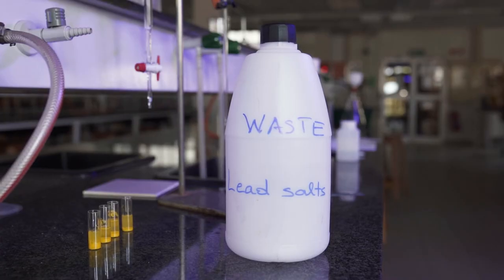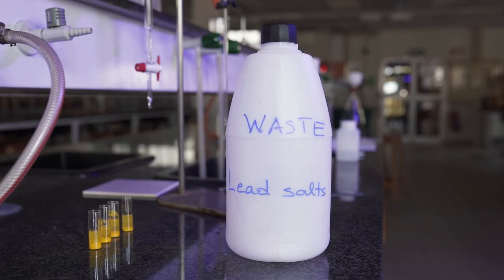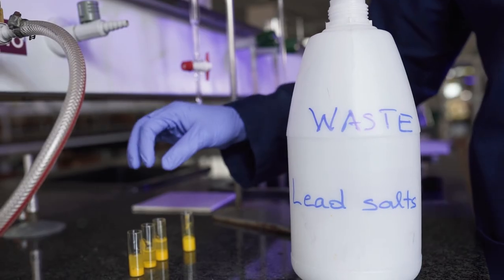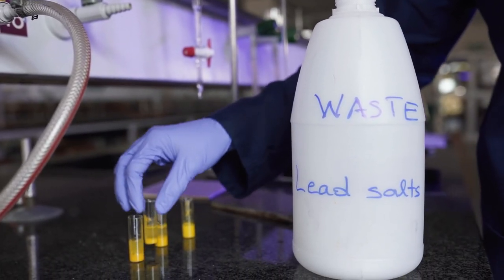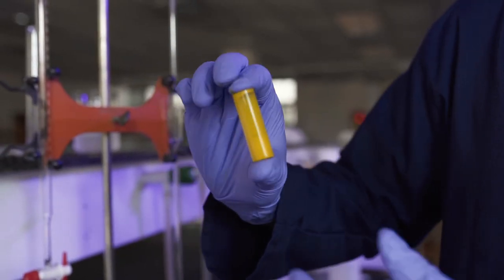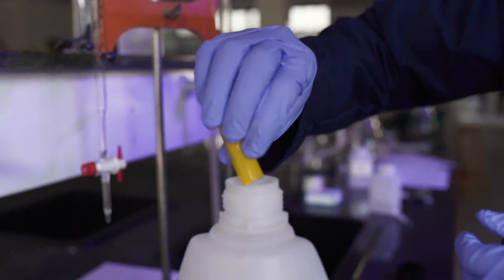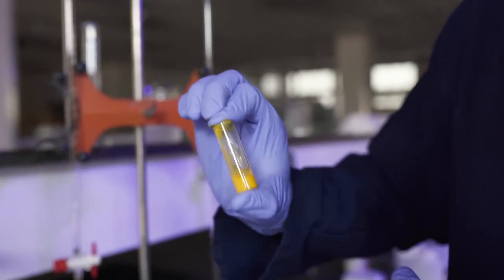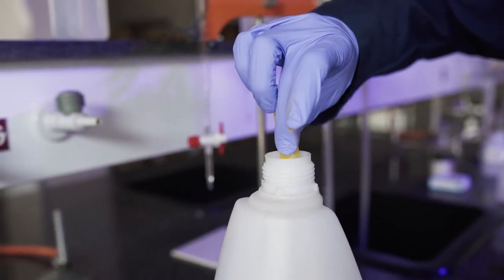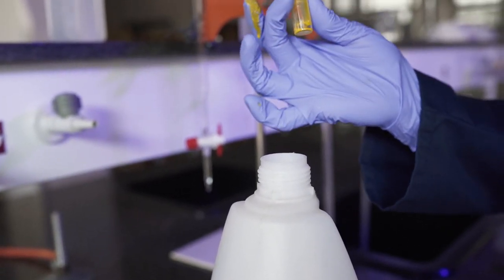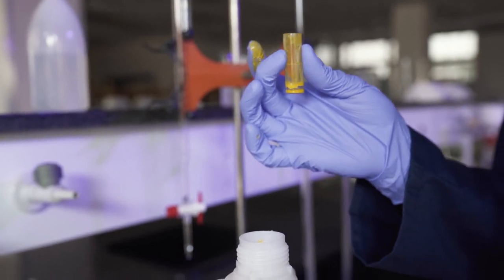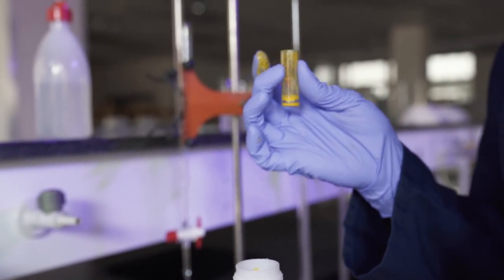Remember that the insoluble lead iodide precipitate that formed is toxic and needs to be disposed of in lead waste. To get the precipitate into solution so that it can be decanted into the waste disposal, we simply shake it so that the precipitate is suspended in solution, after which we decant it into the container. The lead iodide that is left in the vial must be wiped out with tissue paper which should be disposed of in solid waste containers.